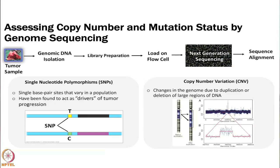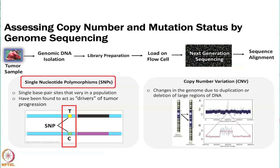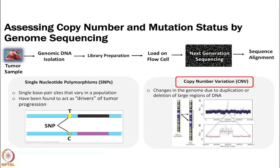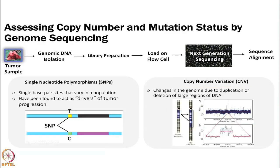Two of the main things you can do with genomics data is identify single nucleotide polymorphisms or SNPs, which are single base pairs that vary. For example, if in your reference genome there is a T and in your sample there is a C, then you know some sort of mutation occurred. Some of these have been shown to be drivers of tumor progression. You can also look at copy number variation, which is changes in the genome due to large duplications or deletions of DNA. If you look at the copy number level you can see approximately double the copies of a region in your reads.